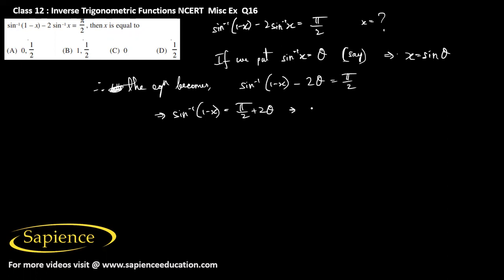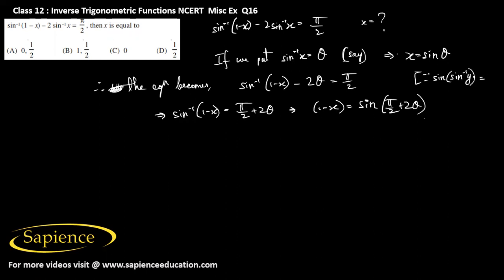Therefore 1 minus x can be written as sine of (pi by 2 plus 2 theta), applying sine on both sides. Since we know that sine of sine inverse y is equal to y.